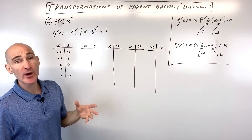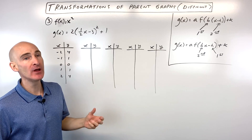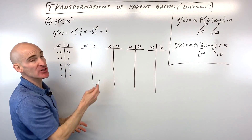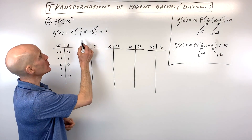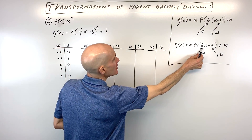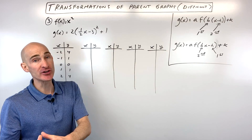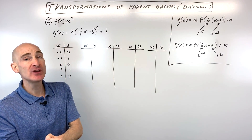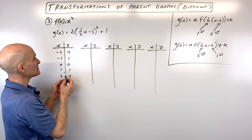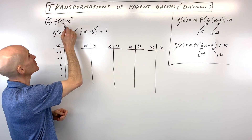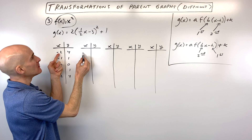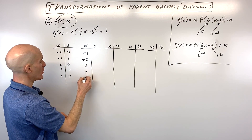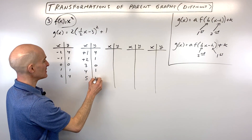Example 3 uses f(x) = x², the standard parabola. We'll graph g(x) = 2(1/2 x − 3)² + 1 using a table. The b value is not factored out, so we do the horizontal shift first. The minus 3 shifts the graph right 3, meaning we add 3 to all x-coordinates. Starting x-values of −2, −1, 0, 1, 2 become 1, 2, 3, 4, 5, while y-values stay the same.